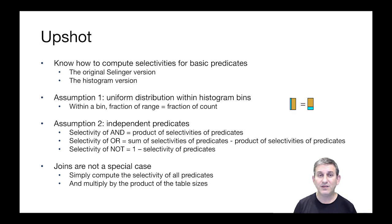The selectivity of the OR of predicates is the sum of the selectivities of those predicates minus the product of the selectivities. We subtract out the product to remove the double counting of values that satisfy both branches of the OR.